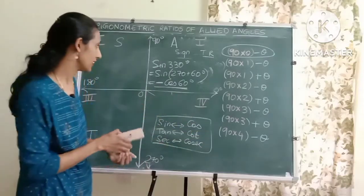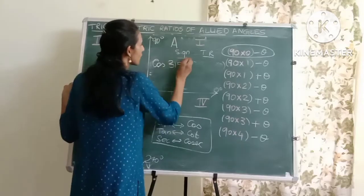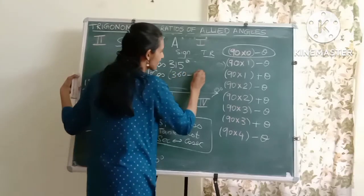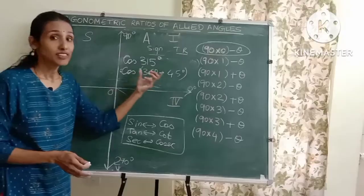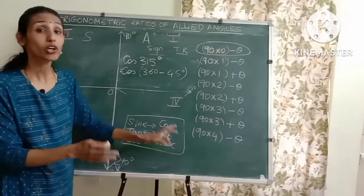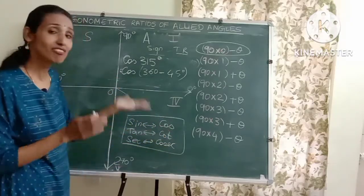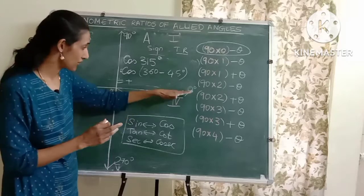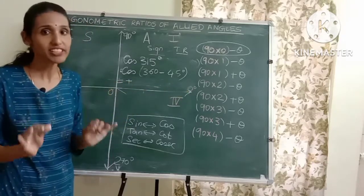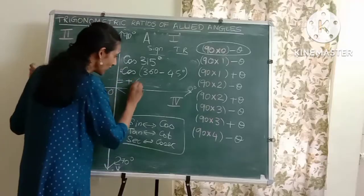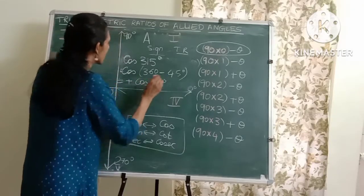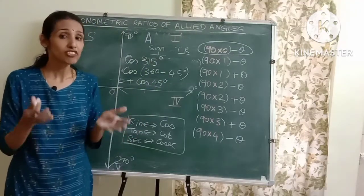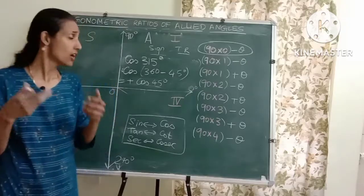For 360 minus theta, let's take cos of 315 degrees — I can write it as 360 minus 45. This lies in the fourth quadrant where cos and sec are positive, and I have cos, so the sign is positive. Since 360 lies on the x-axis, the x-axis never changes the trigonometric ratio, so cos remains cos and I write theta as it is. So cos 315 equals cos 45 degrees. In this way, you can find the trigonometric ratios of even bigger allied angles.